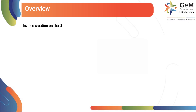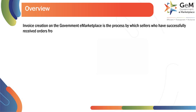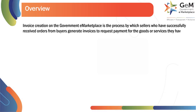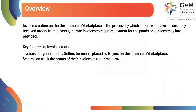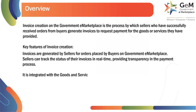Invoice creation on the Government eMarketplace is the process by which sellers who have successfully received orders from buyers generate invoices to request payment for the goods or services they have provided. Key features of invoice creation: invoices are generated by sellers for orders placed by buyers on Government eMarketplace. Sellers can track the status of their invoices in real-time, providing transparency in the payment process. It is integrated with the Goods and Services Tax Network, GSTN, to ensure that all invoices are GST compliant.